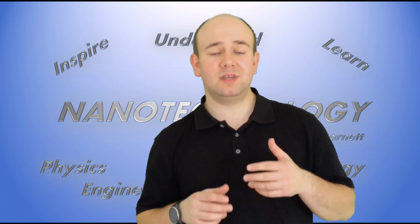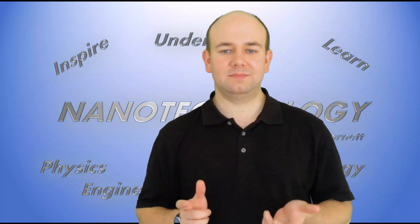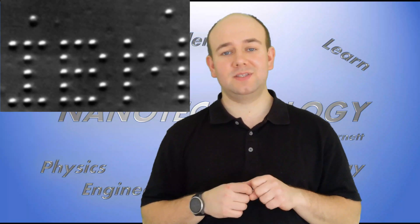STM, as we said in that video, was invented in the early 80s and then in 1989 a group at IBM did the first atomic manipulation using an STM. This was the first time that people had been able to lift up an individual atom and then precisely place it somewhere else. And what they did was pick up xenon atoms and place them on a surface of nickel and spell out the IBM logo or acronym with 35 separate atoms.